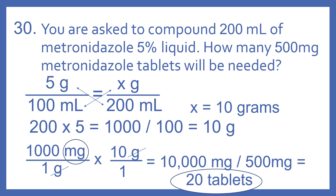We're going to set up equivalent fractions and cross-multiply and divide to get the total number of grams in 200 milliliters. So: 5 grams per 100 milliliters equals X grams per 200 milliliters. 200 times 5 equals 1,000, divided by 100 equals 10 grams. So we need 10 grams of metronidazole in this 200 milliliters to make a 5% liquid.